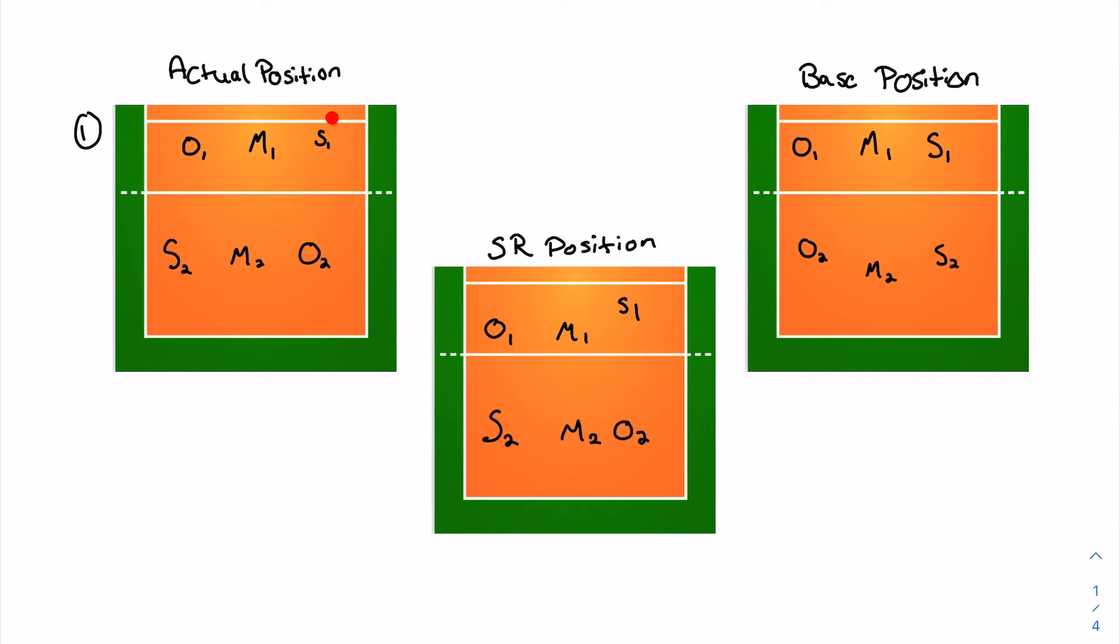So I have three different things right here. I have the actual position, so this is where you are in your six person rotation. Then I have your serve receive position. This is kind of how you position yourself for serve receive. And then I have your base position and this is just where you stand during a play in your base.